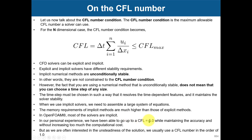A larger CFL number means you will reach your final time faster because you have larger time steps. You can go up to five for good accuracy while reaching your final time faster. More than five, you start to lose information, so be careful. Very large CFL numbers add too much numerical diffusion.